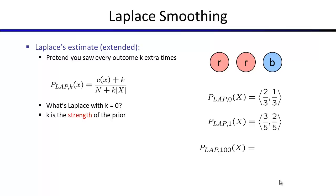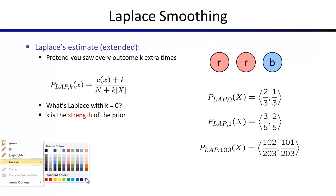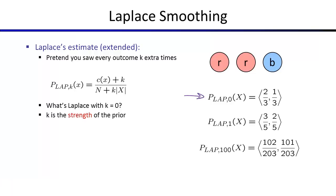If instead of adding one you add a hundred, that's a lot of smoothing — probabilities come out near fifty-fifty even with reasonable data suggesting otherwise. So there's a tradeoff: no smoothing means zero-probability configurations that cause overfitting and poor generalization, while too much smoothing means the classifier ignores the data entirely and predicts fifty-fifty regardless.